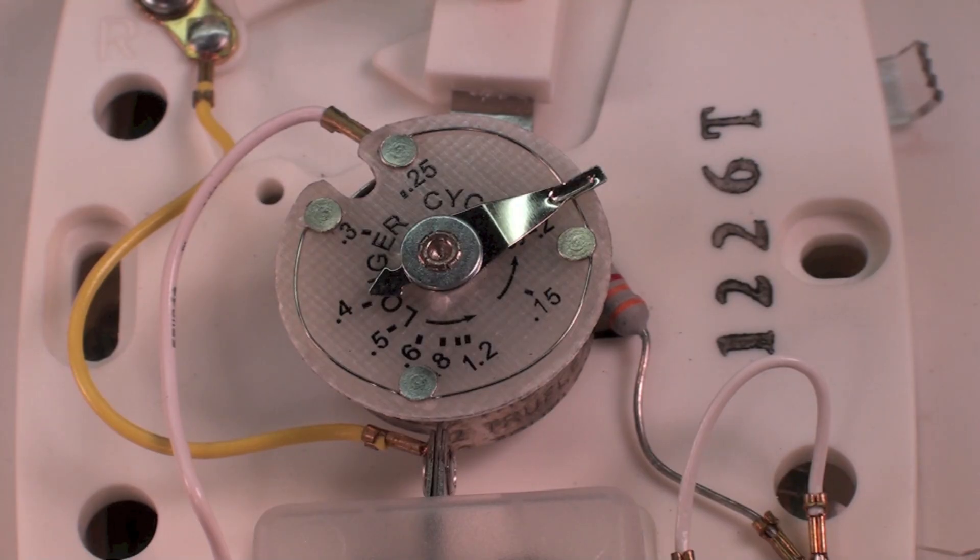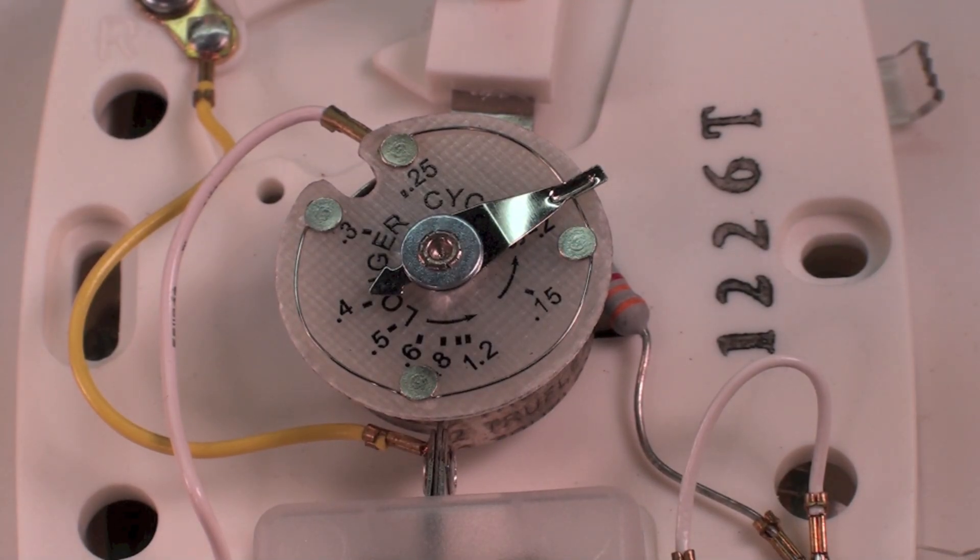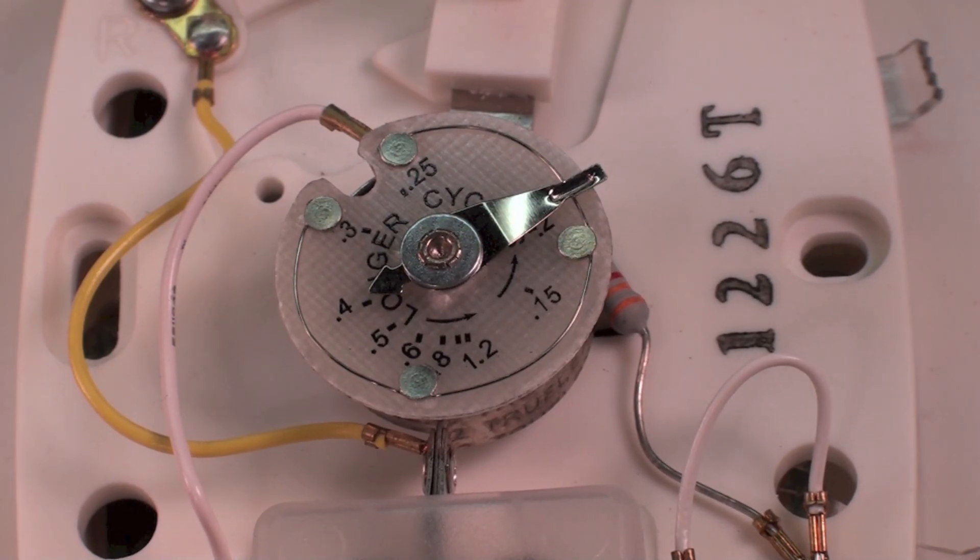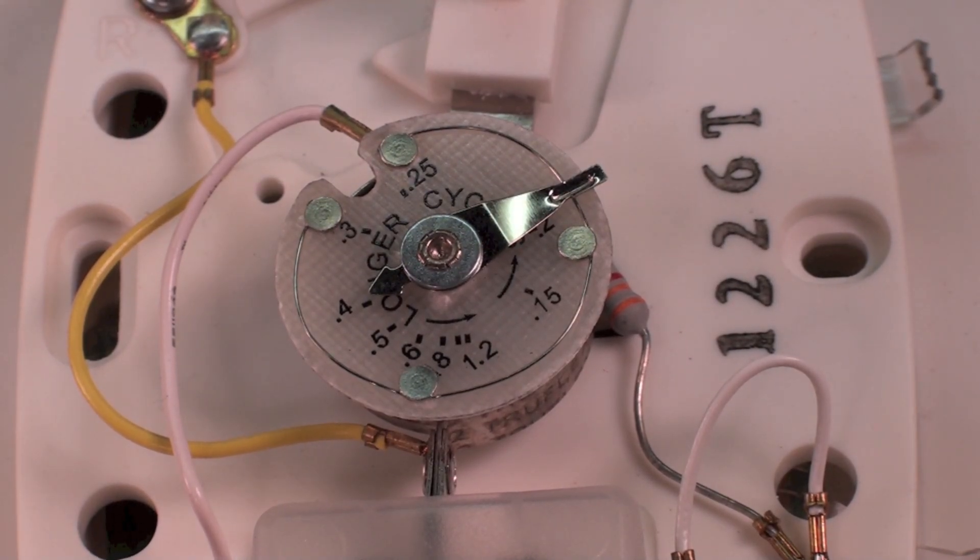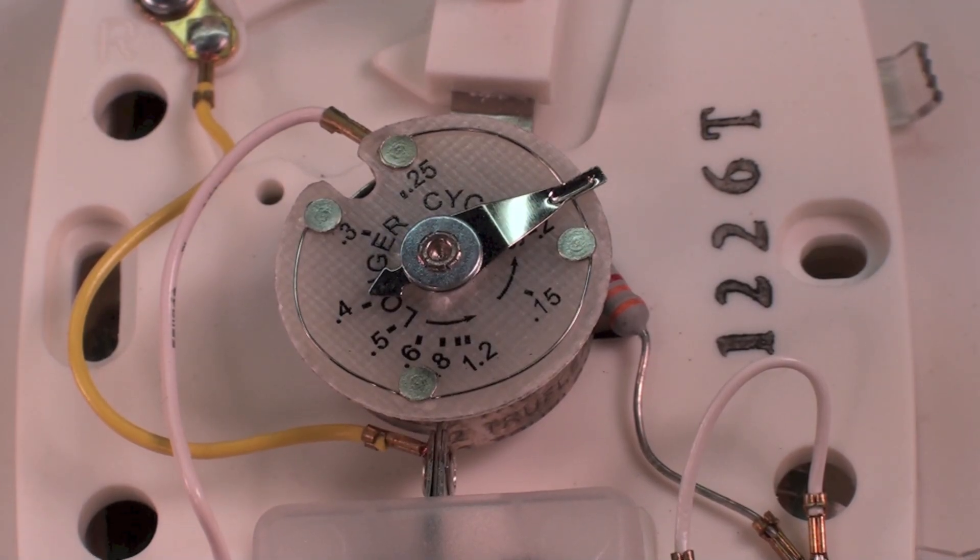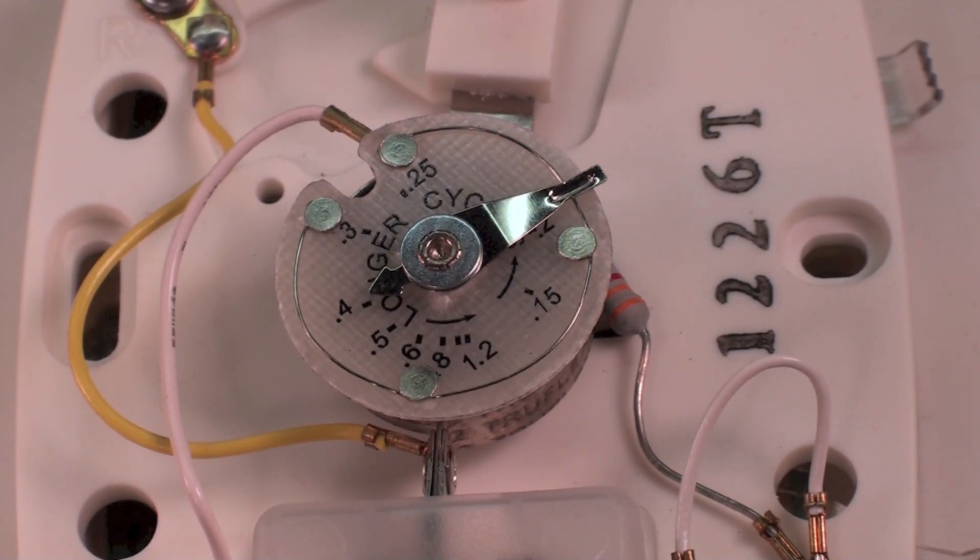If it was cycling too short, where it was only cycling for just a minute or so and then shutting off, I would move it towards longer cycles, a quarter inch at a time.